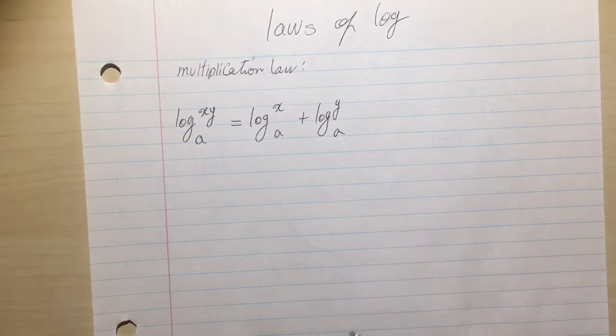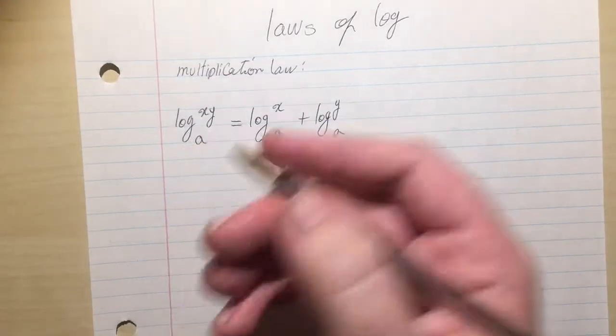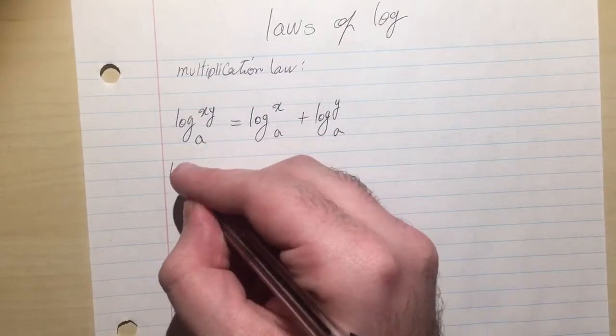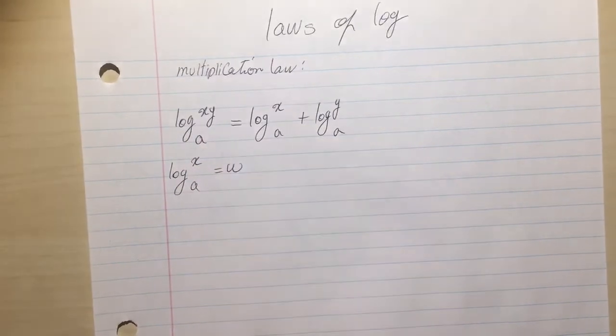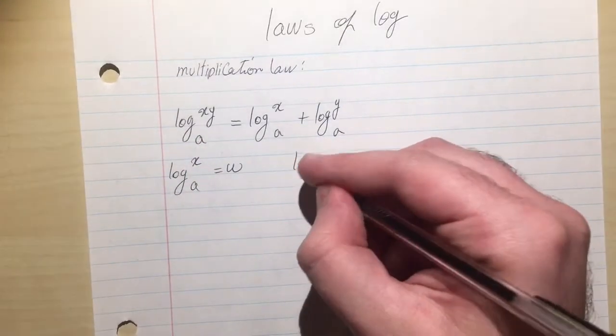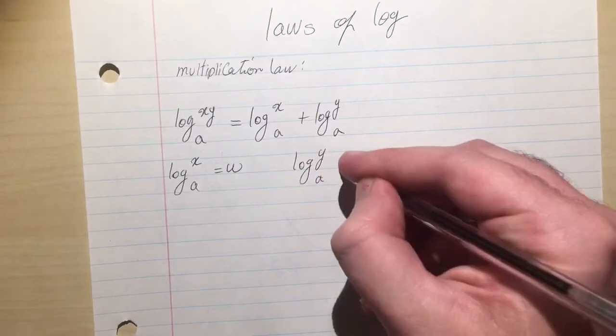Here, I see I have two logs, log x base A and log y base A. So I'm going to name each as w and z. Like log x base A is equal to w, and log y base A is equal to z.